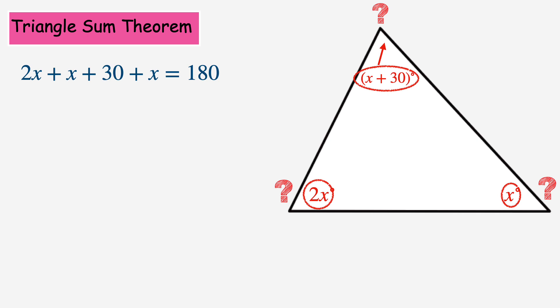Now we need to combine the like terms of 2x, x and x, which when combined or added together equals 4x. And I'll bring down the rest of the equation.